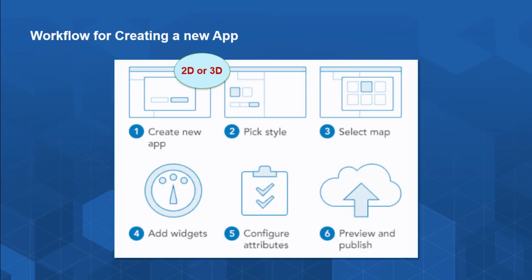For those who haven't used Web App Builder, how do you get started? Following the help documentation, you can build a brand new web app in under five minutes with three easy steps: click Create New App, pick a style, select the map, add widgets, configure attributes, and publish it. Simplified further: decide what data you want, decide the functionality you want, and define the look and feel. It's that easy.